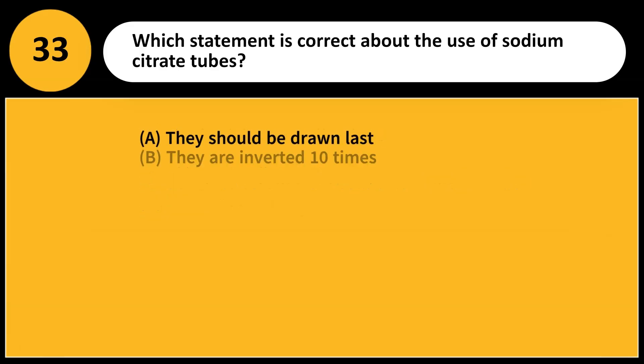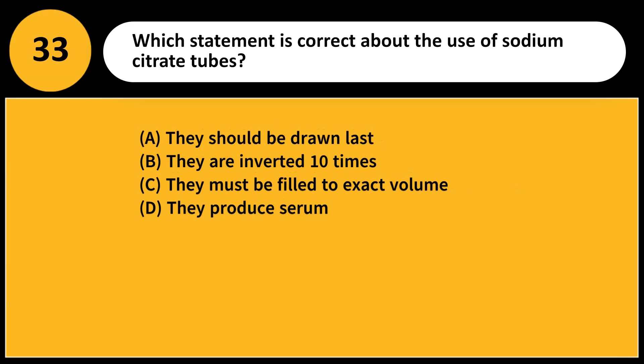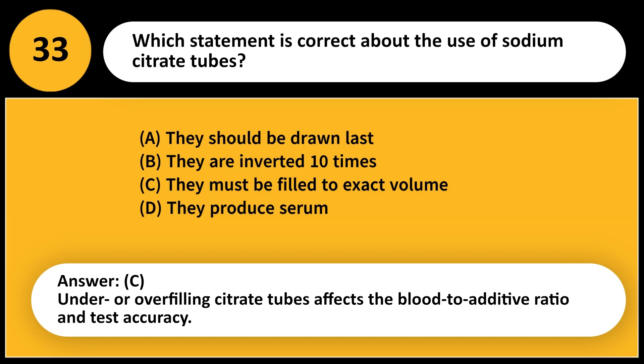Which statement is correct about the use of sodium citrate tubes? A. They should be drawn last. B. They are inverted 10 times. C. They must be filled to exact volume. D. They produce serum. Answer: C. Under or overfilling citrate tubes affects the blood-to-additive ratio and test accuracy.